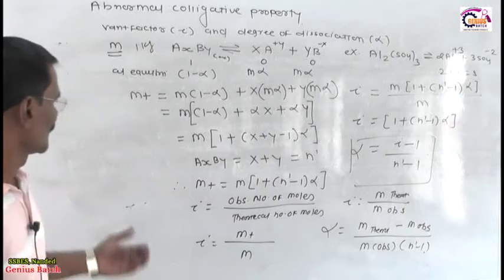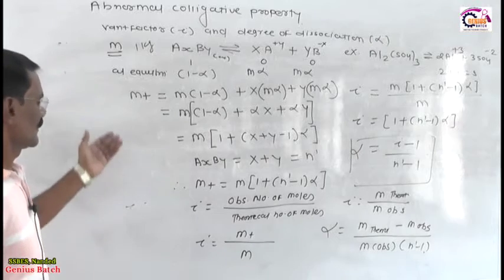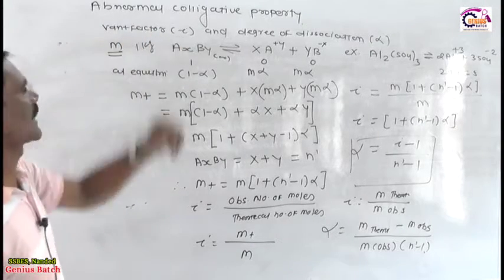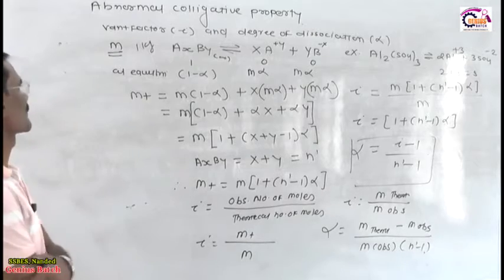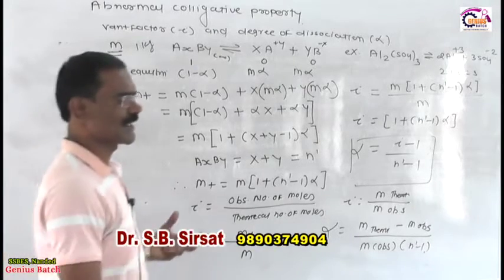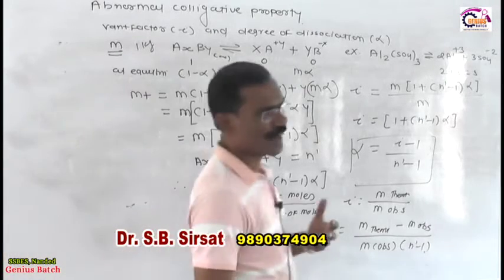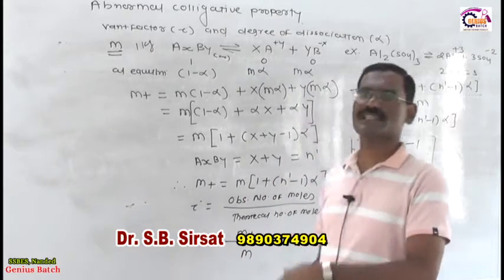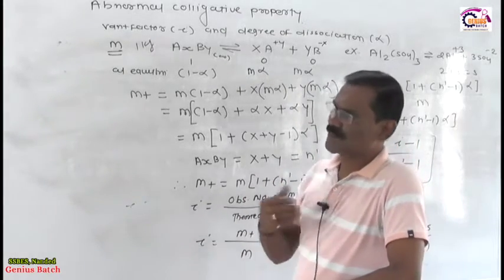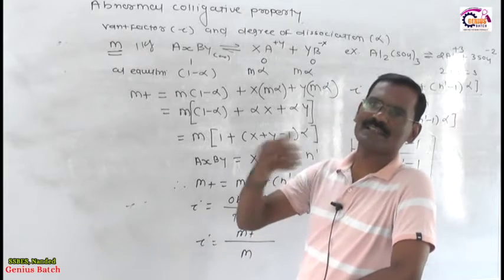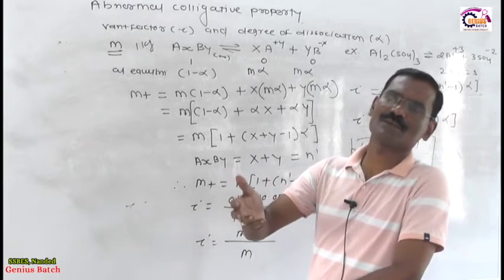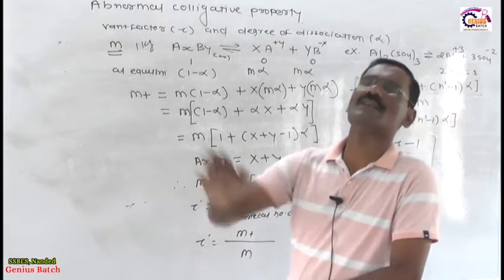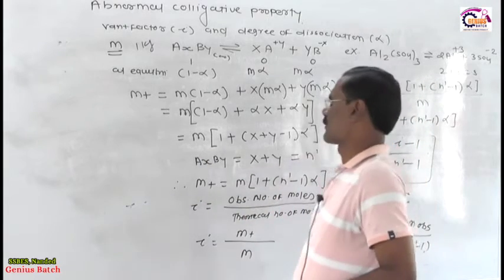Hello friends. In previous videos we completed abnormal colligative property. What is abnormal colligative property? What is the meaning of molecular dissociation? After molecular dissociation, colligative property increases. After molecular association, colligative property decreases, compared with the normal colligative property.